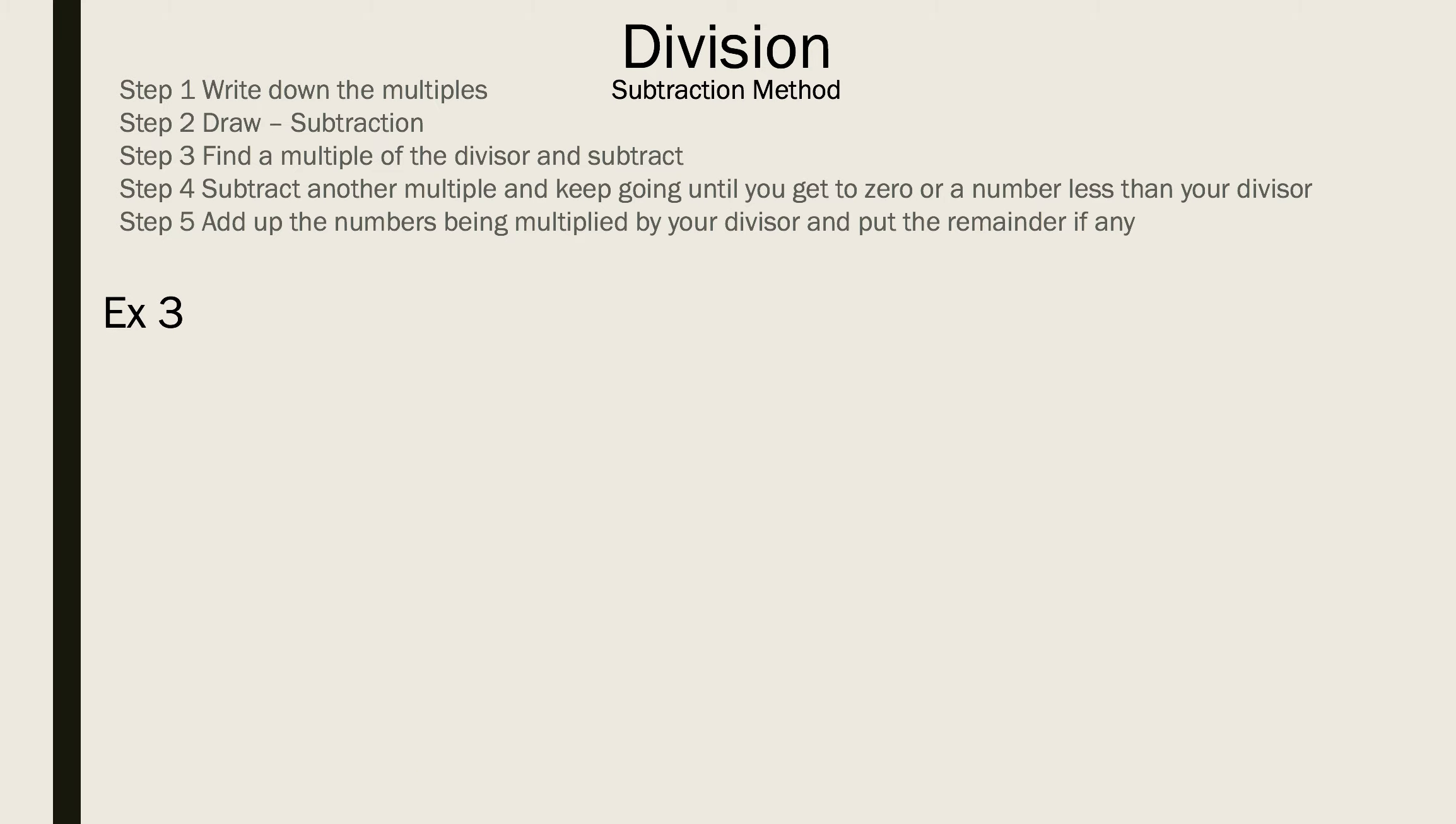Let's go with example 3. What is 73 divided by 5? We need to write down the multiples of the divisor. Now we put the subtraction lines. Now we pick a number. I'm going to pick 50 because that's an easier multiple to deal with. We know that is 5 times 10. Now we subtract and we get 23.